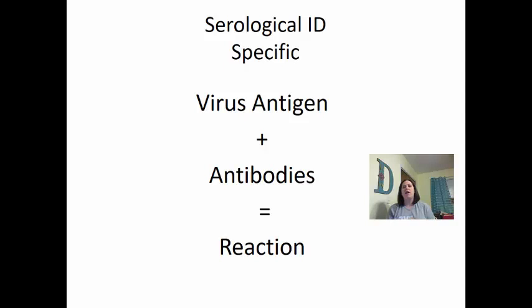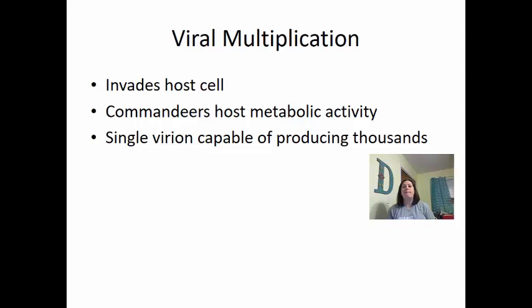Now let's look at the viral multiplication process — how do we get more viruses? These viruses have to invade a host cell, where they commandeer the host's metabolic activity. They hijack the cell, telling it to stop normal functions and instead make more viruses. Like Jack Sparrow commandeering ships in Pirates of the Caribbean, the virus takes over the cell and causes it to make more viruses. A single virion is capable of producing thousands more viruses, so it can multiply very quickly.